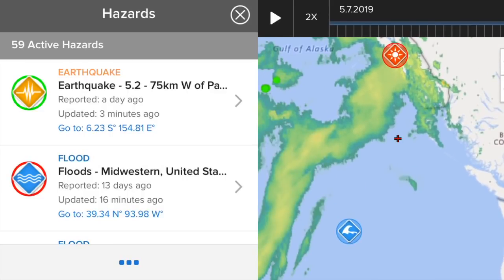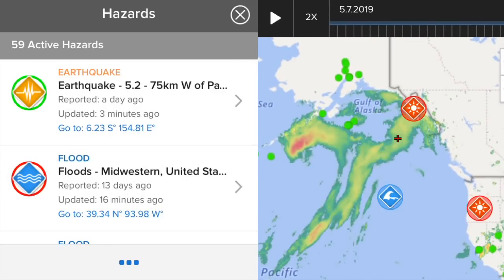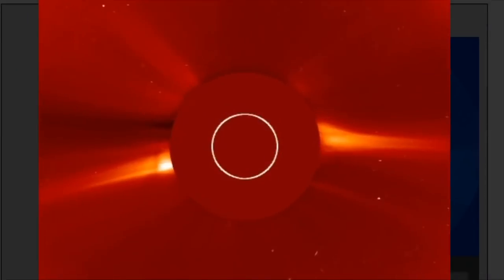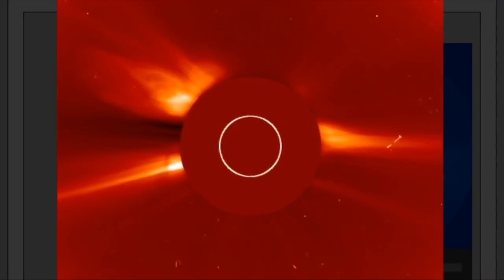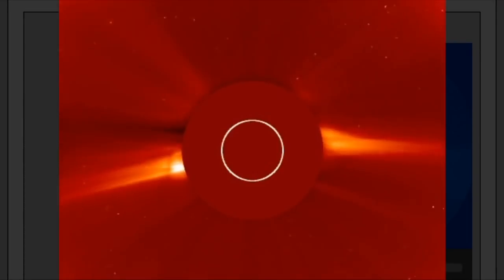Two huge sunspots, and one of them has been shooting off CMEs the last two days. Here is the most recent one, looking at the LASCO C2 images. Northwest eruption, but this sunspot is so active I am really afraid that it might produce an X flare today.